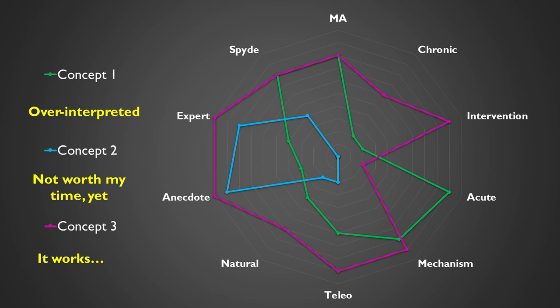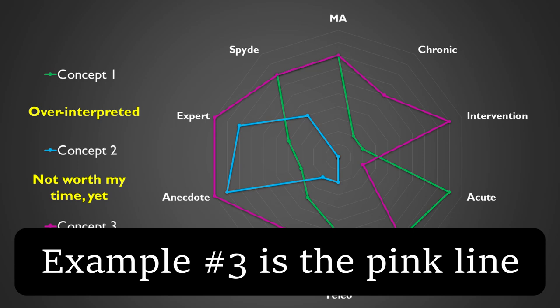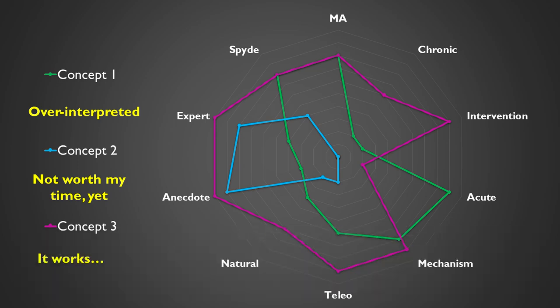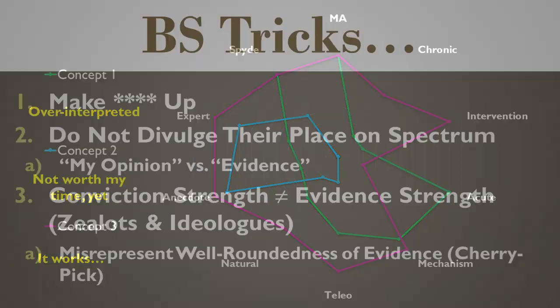Compare those to the fuchsia-pinkish example — you can see it's getting points pretty much across the board. It's not a perfect 100 out of 100, but at this point I'd say: people are trying it and saying it works, my instincts say it works, it makes natural and teleological sense, there's good training data, long-term data, and intervention data showing an acute effect. It probably works — I'll keep paying attention to the research, but this is getting pretty green in my eyes.